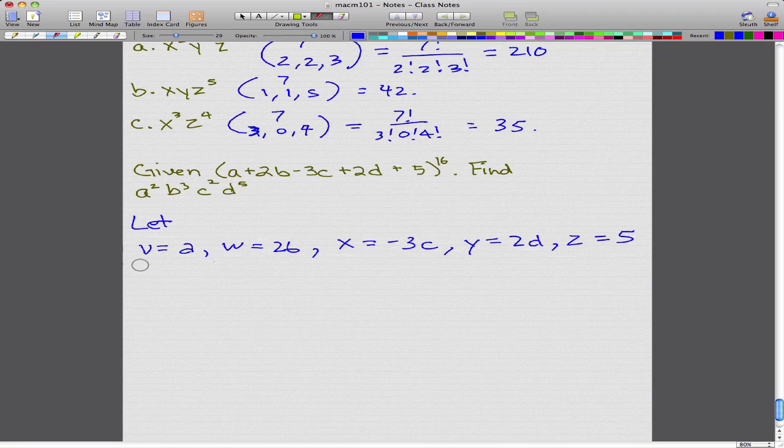Now that we have this, we have to make a new equation for this question with relation to these let statements. So what we get is v plus w plus x plus y plus z, all to the power of 16, because it's similar to this equation. We just changed these numbers so that they're equal to these new variables.